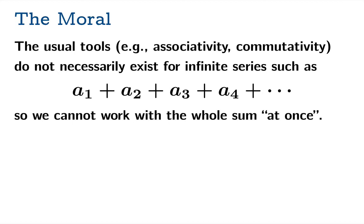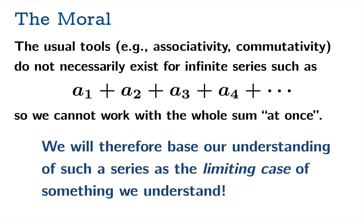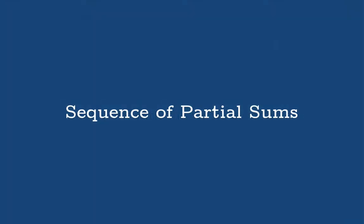The moral here is that the usual tools — associativity and commutativity — don't necessarily exist for infinite series. So we can't work with the whole sum all at once. What we're going to have to do is base our understanding of a series as the limiting case of something we understand. We have to somehow go from finite sums to a definition of an infinite series. The key tool for this is going to be the sequence of partial sums — that's the critical definition here.